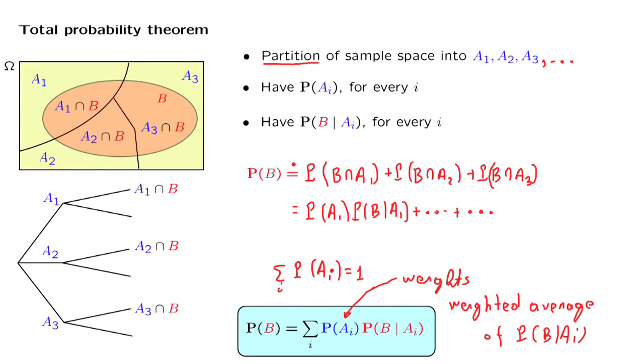Except that in this place in the derivation, instead of using the ordinary additivity axiom, we would have to use the countable additivity axiom. But other than that, all the steps would be the same, and we would end up with the same formula, except that now this would be an infinite sum over the infinite set of scenarios.